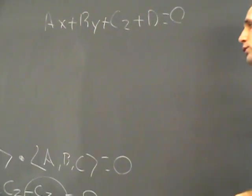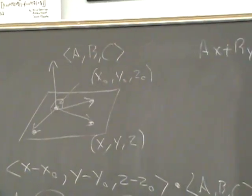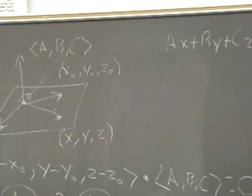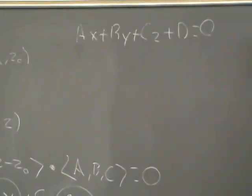One thing that you notice is the original vector that we started with, the A, B, C, they just so happen to be the coefficients of X, Y, and Z when you do the equation of the plane.